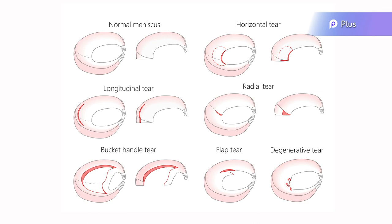The location of the tear in the meniscus is important for its prognosis, as only the outer third of the meniscus is vascularized.